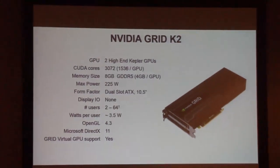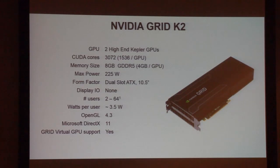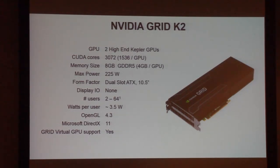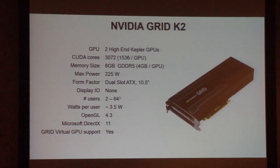NVIDIA was kind enough to give us K2 cards plus K5000 cards. I brought the K2 card here — it comes with two Kepler GPUs. The K1 comes with four Kepler GPUs but they are smaller: the K1 has 768 CUDA cores per GPU, and the K2 has about 1,536 CUDA cores per GPU, which is 3,072 CUDA cores for the whole card. We had to buy new cases for those cards because they are big — now we have gaming cases. My kids love that; they think for the first time I have cool stuff in my lab.